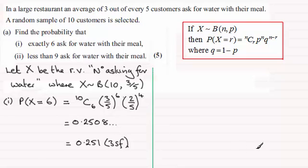And now moving on to the second part. In this one, we've got to find the probability that less than 9 ask for water with their meal. So we're looking for the probability then that X is less than 9. And the easiest way of doing this is to think that all the probabilities for X going from 0 to 10 would be 1.